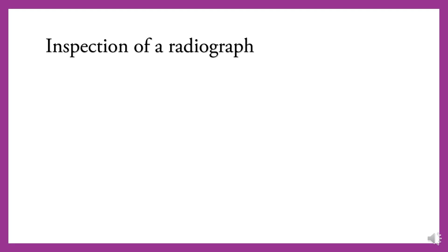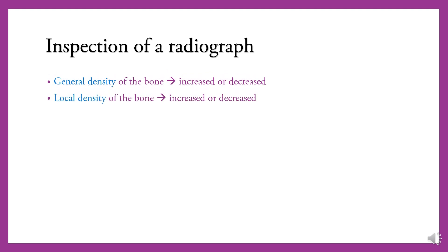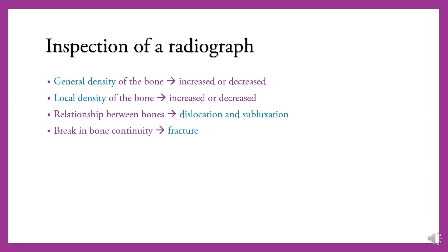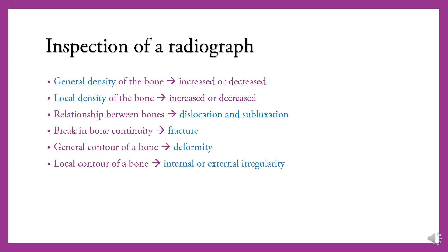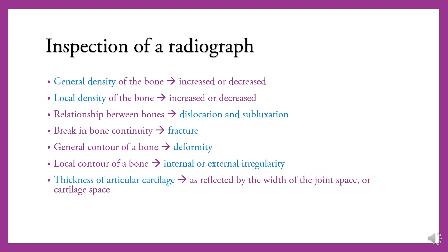When inspecting a radiograph, assess: general density of bone (increased or decreased), local density of bone (increased or decreased), relationship between bones which marks dislocation or subluxation, break in bone continuity which marks fracture, general contour of bone which marks deformity, local contour of bone for internal or external irregularity, thickness of articular cartilage as reflected by the width of the joint space or cartilage space, and changes in soft tissue which could be a sign of swelling or atrophy.